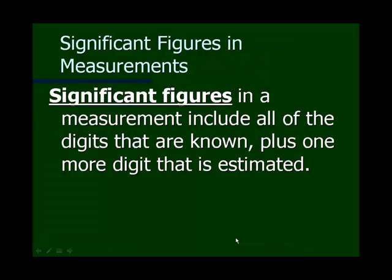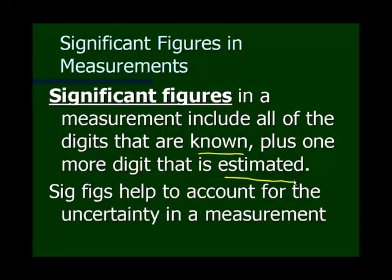This uncertainty leads us to the concept of significant figures. Significant figures are all the numbers in a measurement that we know for certain, plus one more that you estimate. Significant figures in a measurement include all the digits that are known, plus one estimated digit. It's this idea of significant figures that tells us how accurate a number is and how uncertain we are about certain measurements.